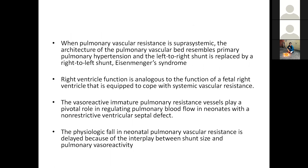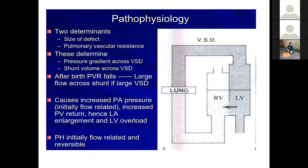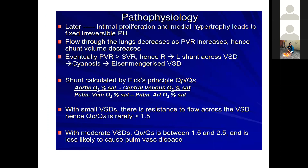When pulmonary vascular resistance approaches systemic levels, the architecture of the pulmonary vasculature resembles primary pulmonary hypertension, and the left-to-right shunt is replaced by right-to-left shunt — Eisenmenger syndrome. The right ventricle function is analogous to the fetal right ventricle, which is more equipped to cope with systemic resistance. The vasoreactive immature pulmonary vessels play a pivotal role in regulating pulmonary pressure in neonates with a non-restrictive VSD, and the pathologic fall in neonatal pulmonary vascular resistance is delayed because of structural immaturity and pulmonary vasodilation.